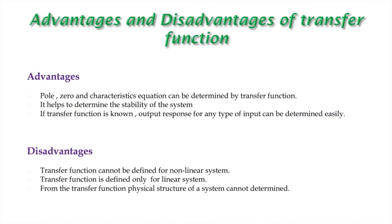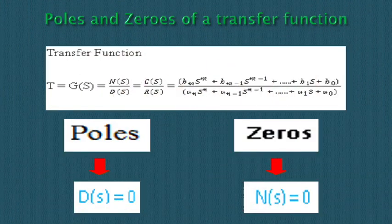Advantages and disadvantages of transfer function. The advantages are: all zeros and the characteristic equation can be determined from the transfer function; it helps to determine the stability of the system; and if the transfer function is known, the output response for any type of input can be determined easily. The disadvantages are: transfer function cannot be defined for nonlinear systems; it is only defined for linear systems; and from the transfer function, the physical structure of the system cannot be determined.